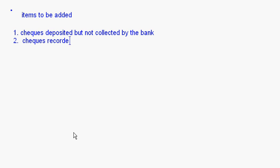The second item to be added is: checks recorded in the cash book but not sent to the bank. When you receive a check you record it in the cash book, so the overdraft balance decreases in the cash book. But since you have not sent the checks to the bank, the bank cannot credit that amount, so the overdraft balance as per the passbook is more — this should be added.